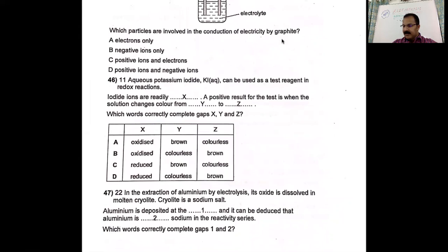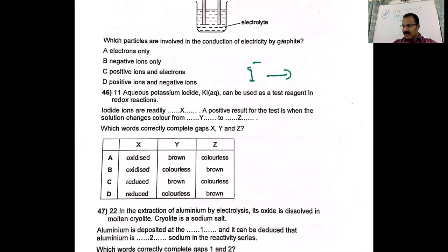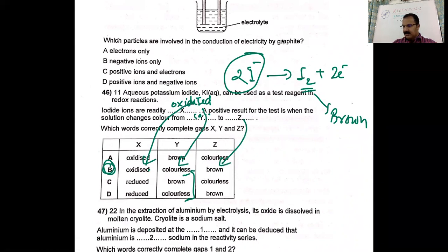Question 46: aqueous potassium iodide can be used as a test reagent in redox reactions. Iodide ions are readily oxidized — they lose electrons. A positive result for the test is when the solution changes color from colorless (potassium iodide solution) to brown (iodine). So the solution changes from colorless to brown when iodide ions are oxidized. Option B is correct — iodide is oxidized and the color changes from colorless to brown.